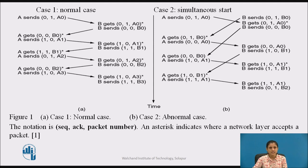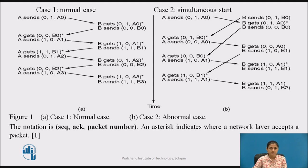A difficult situation arises if both sides simultaneously send an initial packet. This synchronization difficulty is illustrated by Figure 1. In part A, the normal operation of the protocol is shown. In part B, the difficulty is illustrated. If B waits for A's first frame before sending one of its own, the sequence is as shown in Figure A and every frame is accepted. However, if A and B simultaneously initiate communication, their first frames cross, and the data link layer then gets into the situation shown in Figure B.